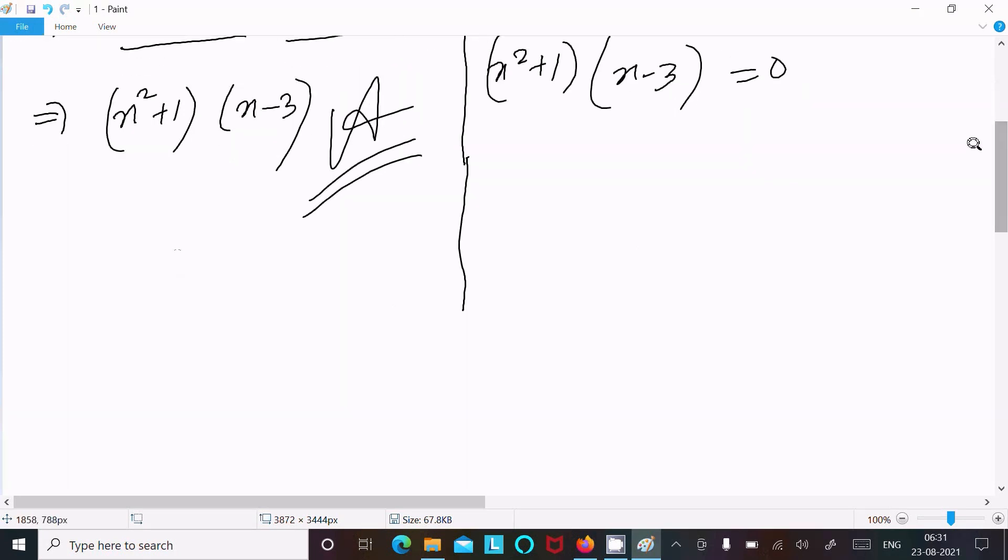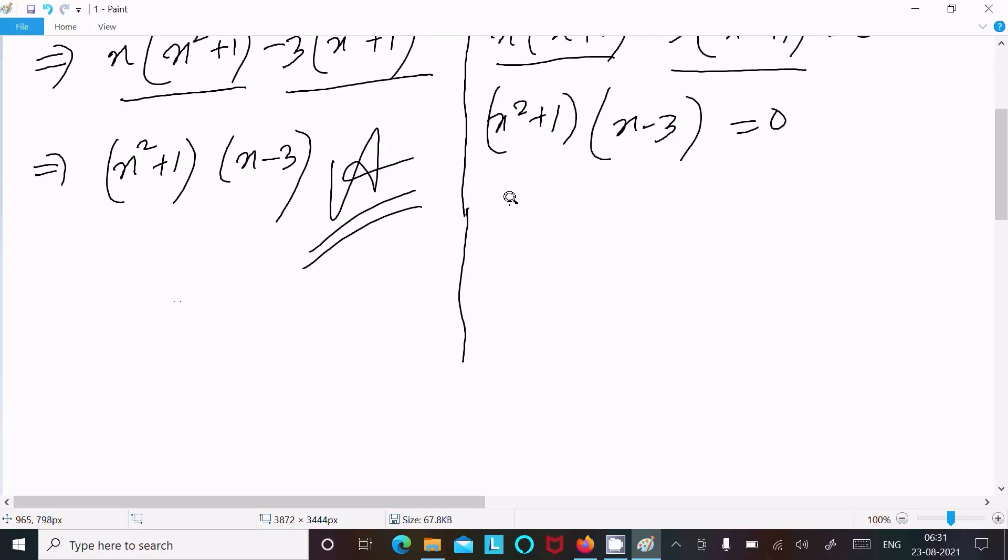After that, let's make the relationship, so x² + 1 = 0 and here x - 3 = 0. Now we can write x² = 0 - 1.